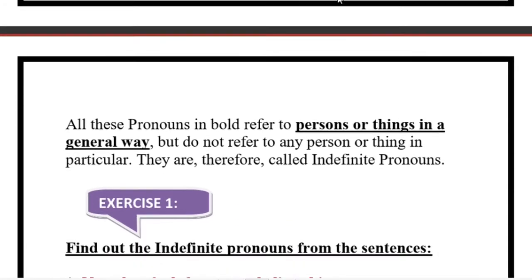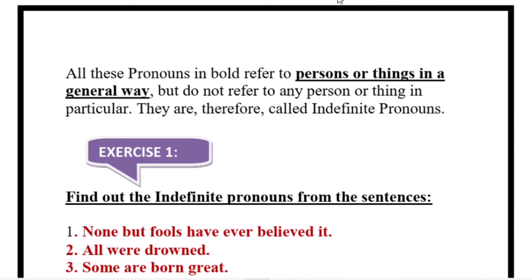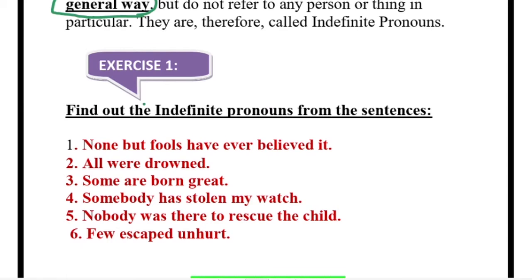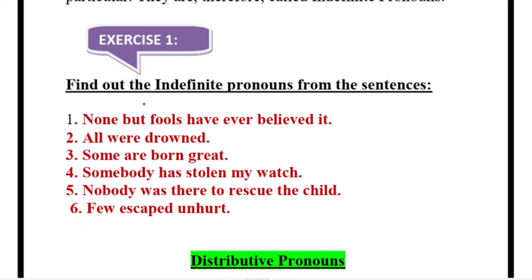So what will be the definition? All these pronouns that refer to persons or things in a general way — if you want to write down the definition, use only this word: a general term for something. Now we will do the exercise: find out the indefinite pronouns from the sentences. Number one — 'None but fools have ever believed it': 'none' — it is not telling in particular who are those fools. Next — 'All were drowned': 'all' — not telling that this girl or that boy drowned, no.